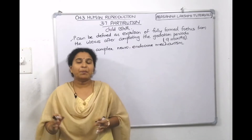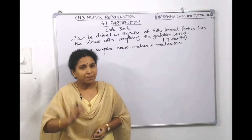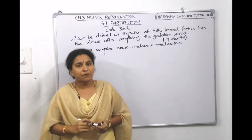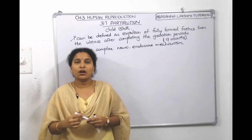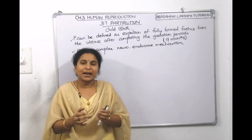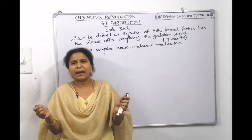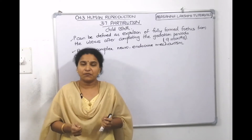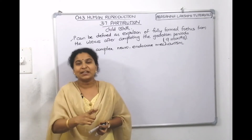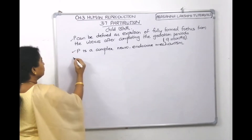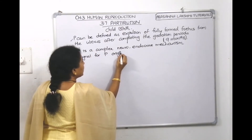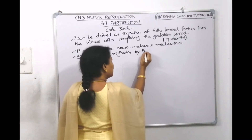The signal for labor pains and childbirth originates from the fully developed fetus along with the placenta. The fully developed fetus and placenta release a factor called the fetal ejection factor. This fetal ejection factor causes mild contraction of the uterus, and this mild uterine contraction is called the fetal ejection reflex. The signal for parturition originates from the fully developed fetus itself, with the help of the placenta.